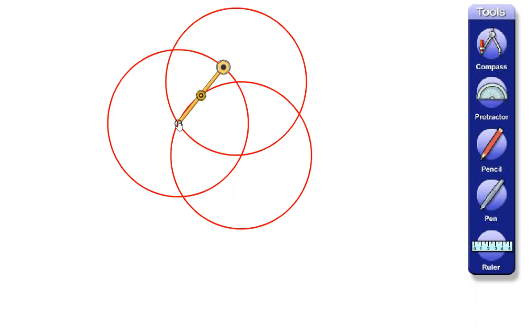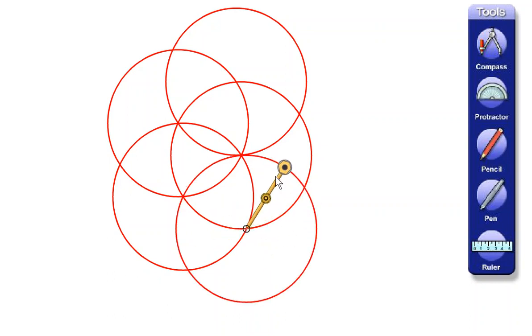We'll draw another one and just keep going round, moving that to meet where they cross. Draw another one. I can draw my circles quite quickly here because it's digital. You might need to take a little bit more time - you won't be doing it as speedily as I do.